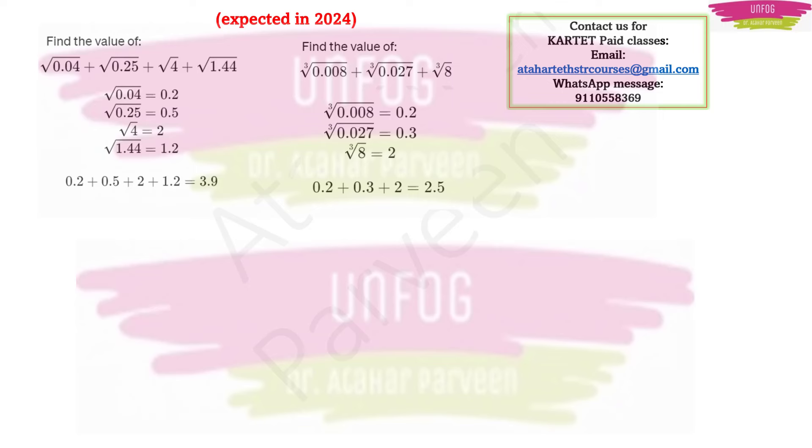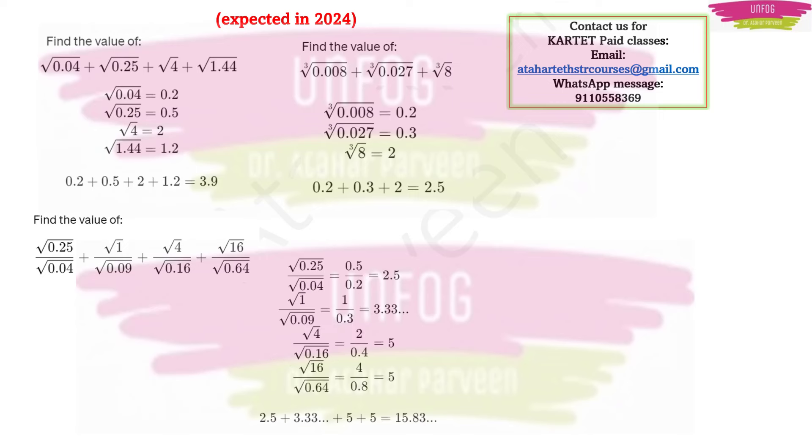A similar type of question you can practice is this. This is including division and addition. You all know the values of square roots for all the numbers - for 0.25 it is 0.5, for 0.04 it is 0.2, for square root of 1 your answer will be 1, for 0.09 it is 0.3, square root of 4 will be 2, square root of 1.6 will be 0.4, square root of 16 will be 4, and square root of 0.64 will be 0.8. This is a little bit tougher question because more simplification is required. We cannot say how much easier or tougher the question will be. That's why I'm giving you both type of questions.